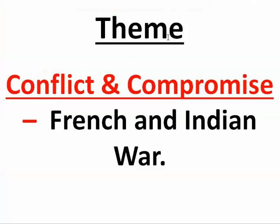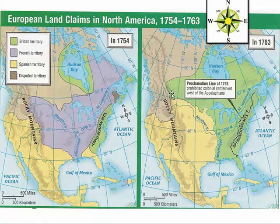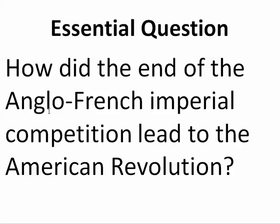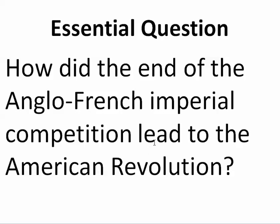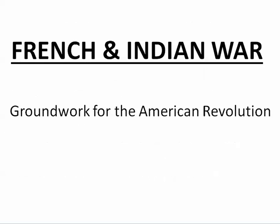The theme here is conflict and compromise. We see the French and Indian War, and the Treaty of Paris 1763 is going to be the compromise that ends this conflict. Our central question: how did the end of the Anglo-French Imperial Competition — the French and Indian War — lead to the American Revolution? How did it lay the groundwork for the American Revolution?